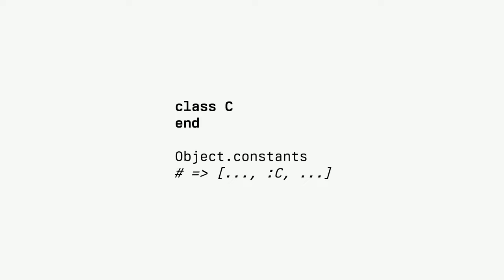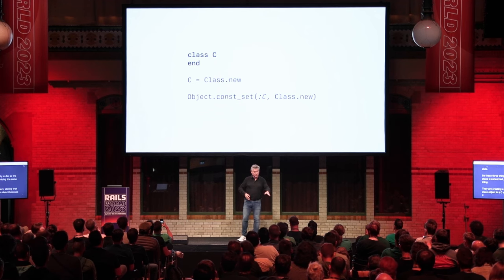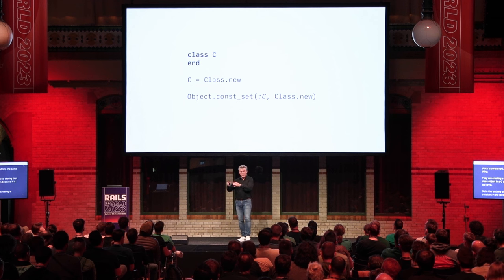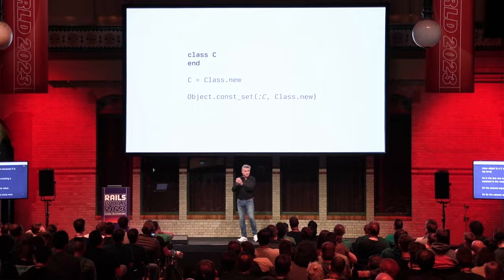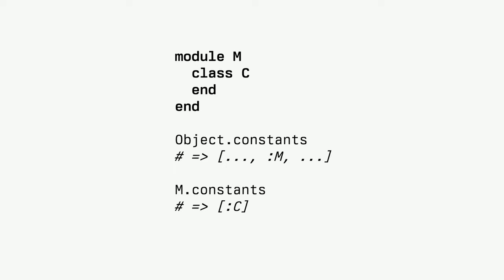The actual listing would include all these things. Now looking at it from the API perspective, these three approaches are doing the same thing: creating a class object and storing it in the C constant in Object because it is top-level. Using const_set, the receiver is Object, the name is C, and the value is Class.new.